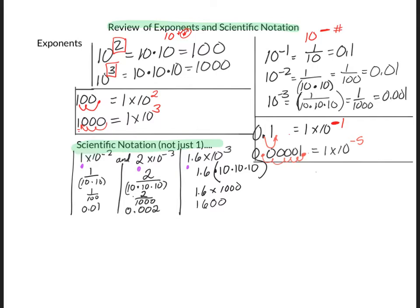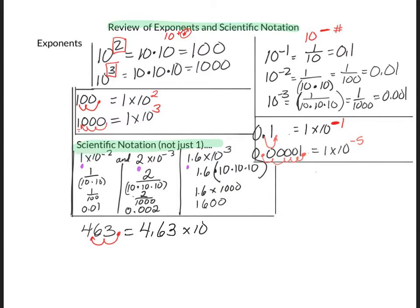Now let's go the other way. What if I have the number 463? What is that in scientific notation? You're going to move the decimal back 1, 2, and you will get 4.63 times 10 to the positive 2. And if I have a number like 0.000496, that would become 4.96 times 10 to the negative 4.